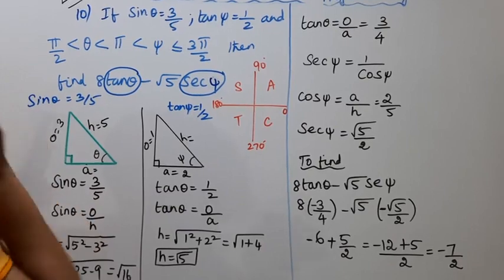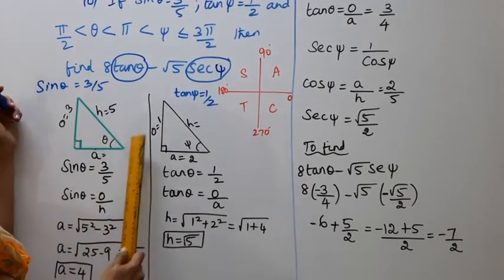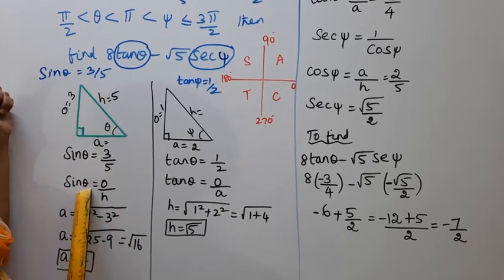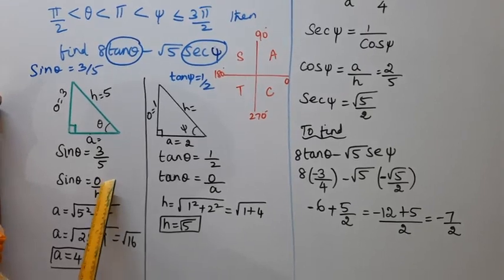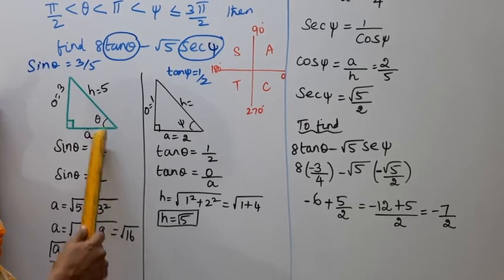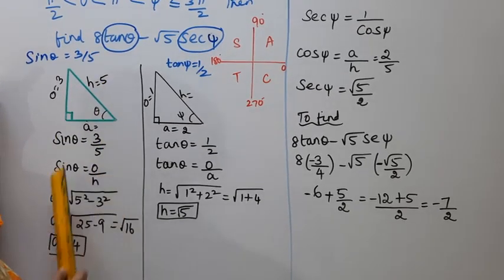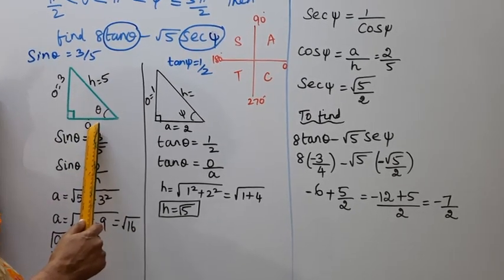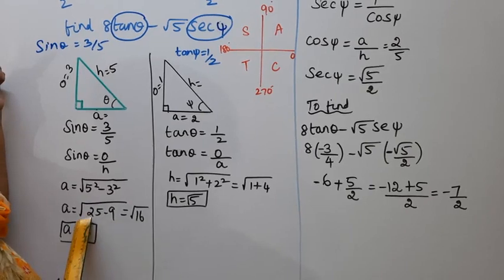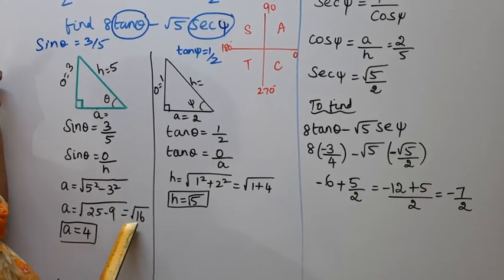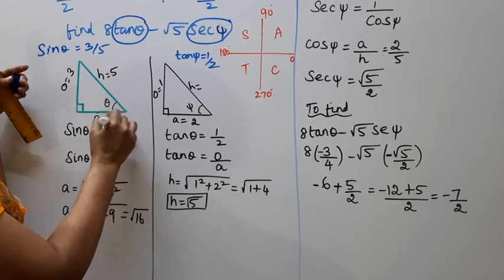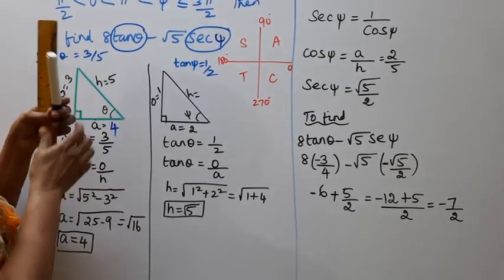Draw a right angle triangle diagram. sin θ = opposite by hypotenuse = 3/5, so opposite = 3 and hypotenuse = 5. The adjacent side is square root of 5² minus 3², which is square root of 25 minus 9, which is square root of 16, equal to 4.